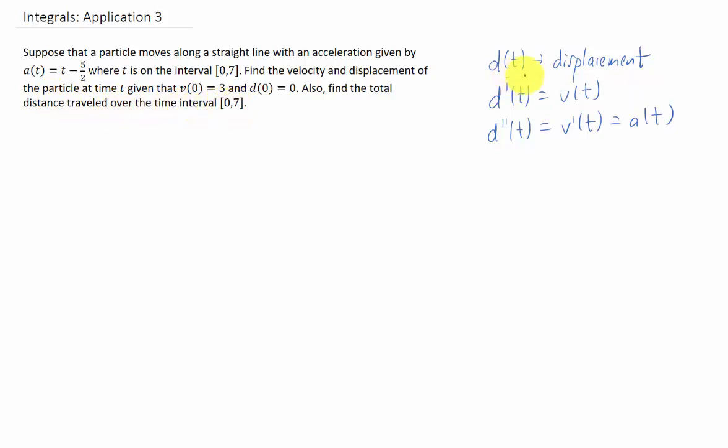So we'll start by recalling this information. If we have the displacement function d(t), if we take a derivative of that, we get the velocity function. If we take a second derivative of displacement, that's the first derivative of velocity, and that's the acceleration. If we reverse this information, we'll notice that the integral of acceleration gives us the velocity function plus some constant, and the integral of a velocity function gives us the displacement function.